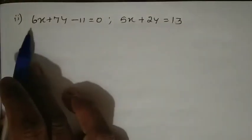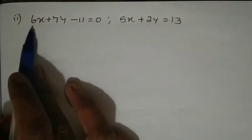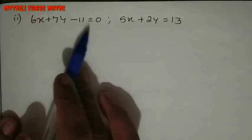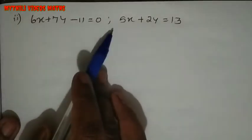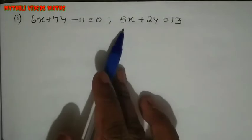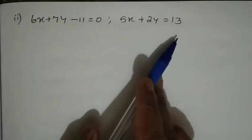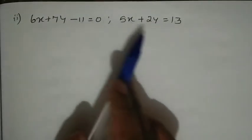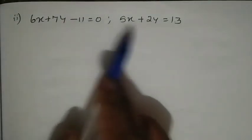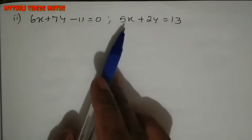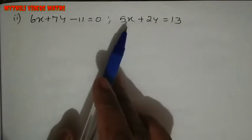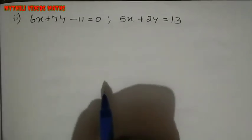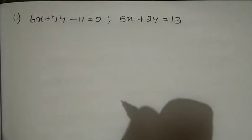The 2nd Subdivision is what we need to do. The equations are: 6x plus 7y minus 11 equal to 0, and 5x plus 2y equal to 13. We will use the Cross Multiplication method.